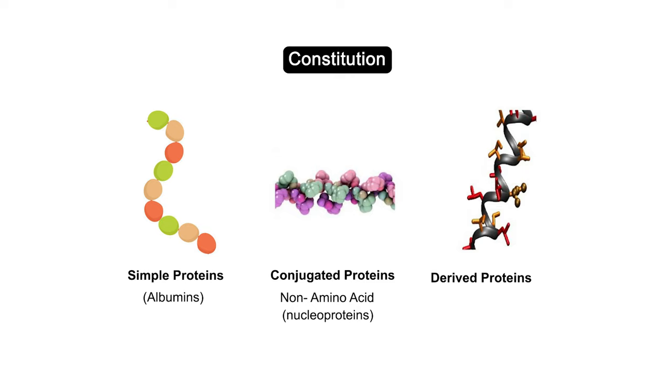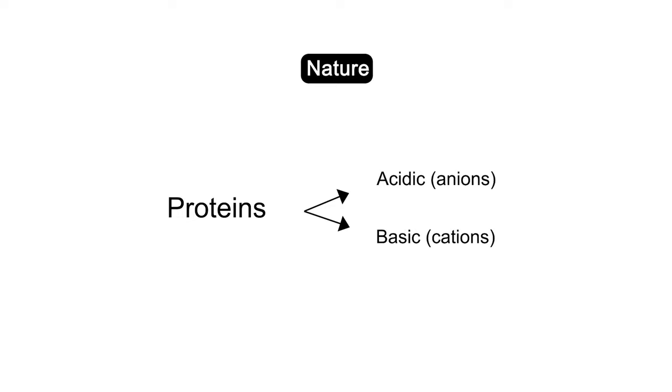Proteins that are derived from simple or conjugated proteins by partial or complete hydrolysis are called derived proteins. On the basis of nature of molecules, proteins can either be acidic, existing as anions, or basic, existing as cations. The mean value of the total pH level of plasma proteins is acidic.